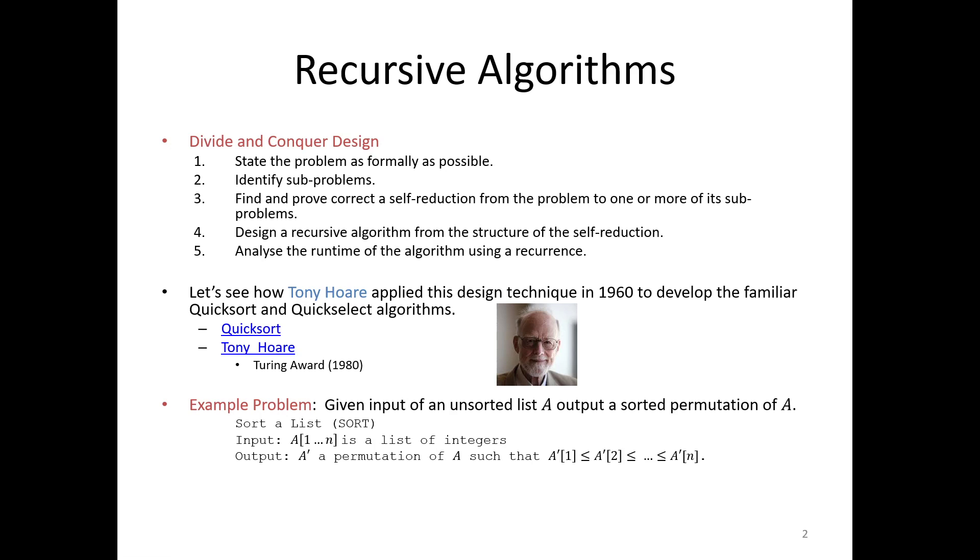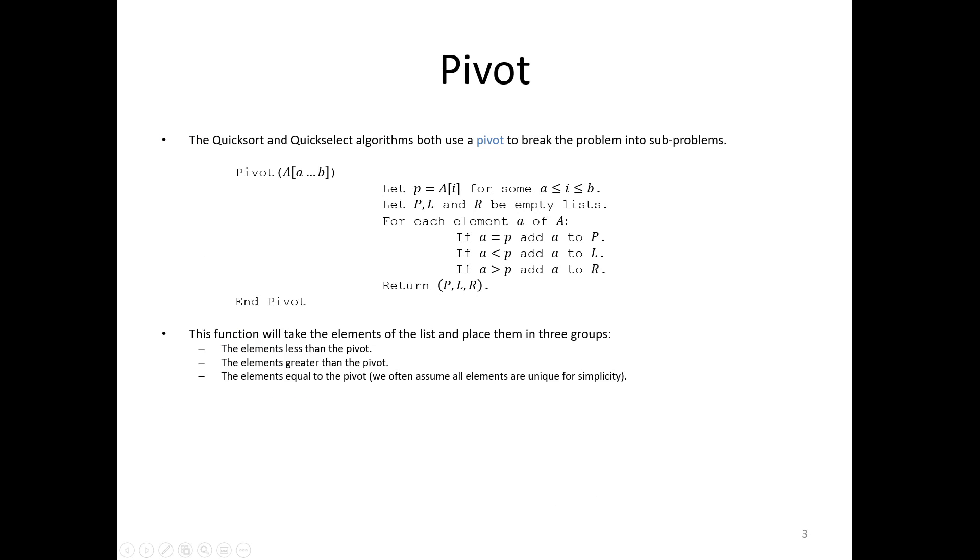So we're still working with the sorting problem, and this is similar to the one we looked at in previous videos, so hopefully we're familiar. Just a quick review. Input, we're going to get a list. Our output is a permutation of that list in, it looks like here, non-decreasing order or ascending order.